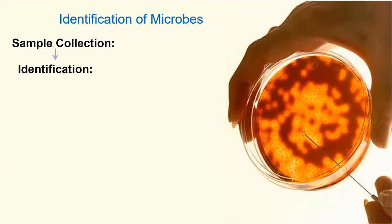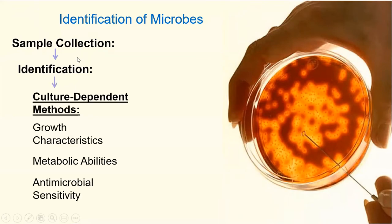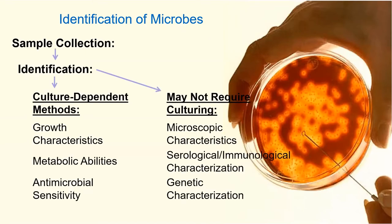After sample collection the idea is to identify what you have. If a patient comes in with suspected strep throat, you do the throat swab. There is a rapid test for strep, but it's only been around about 10–15 years and often comes back negative, so it gets sent to a lab for a clinical microbiologist to culture. Some identification methods are culture-dependent; others don't require culturing — like microscopy, immunological characterization, or DNA/RNA tests.